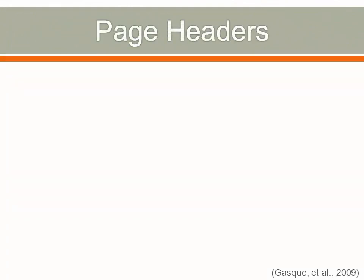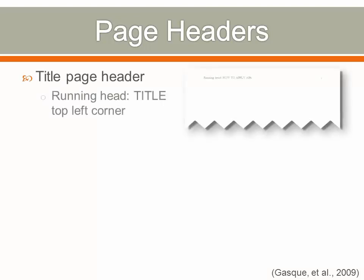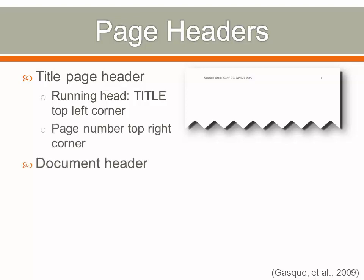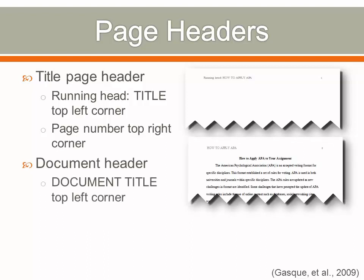The APA document includes two different headers. The title page header is different from the rest of the paper. It should have a running head flush to the left with the abbreviated title. The running head label is lower case while the title is all caps. The page number should be at the top right corner. The header for the remainder of the paper should include the document title in all caps at the top left corner with the page number continued on the right corner. This is not typed at the top of the page; rather, select Insert and then Header and adjust the header as shown.